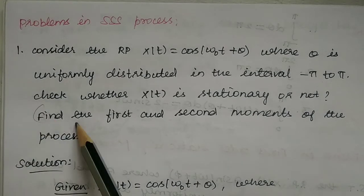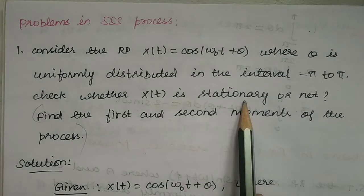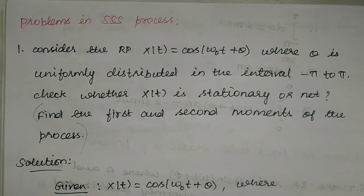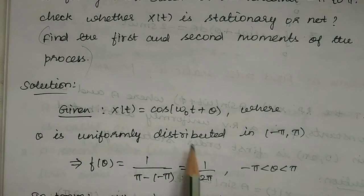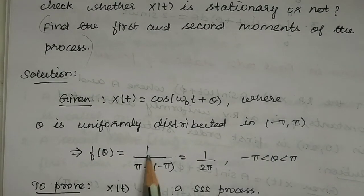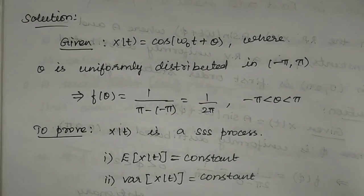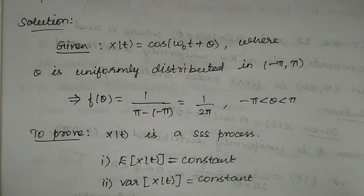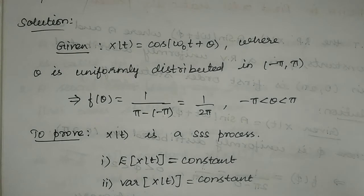This involves finding first and second order stationarity. For WSS (wide-sense stationary or triple S process), we need: expectation of x(t) is constant, and variance of x(t) is constant — that is, mean and variance are constant. θ is uniformly distributed, so f(θ) = 1/(b − a) = 1/2π.